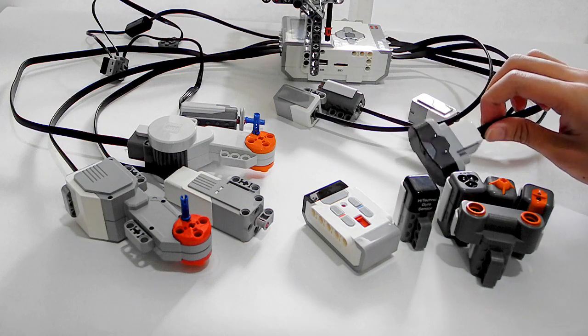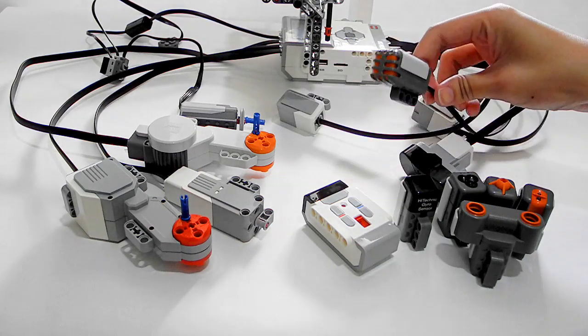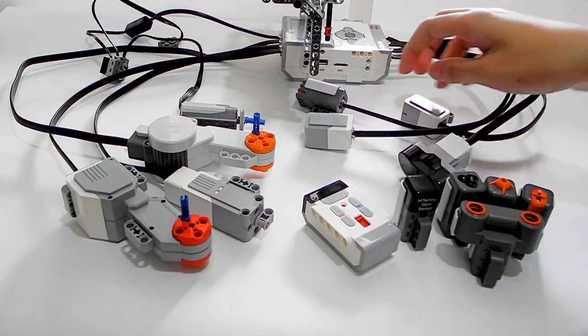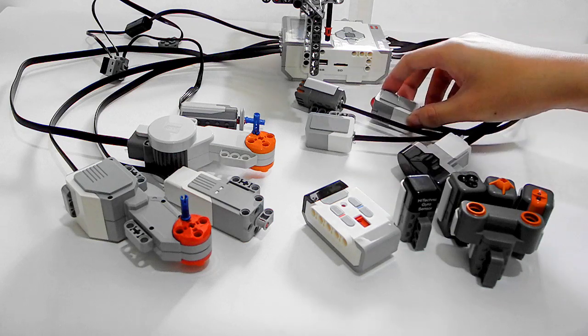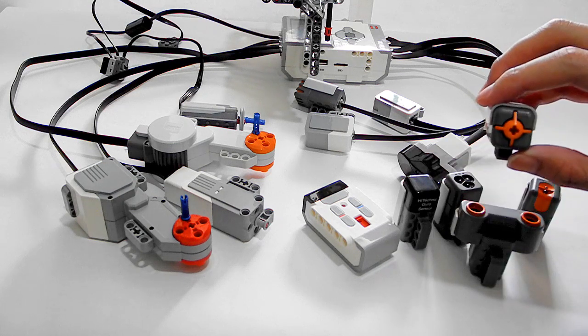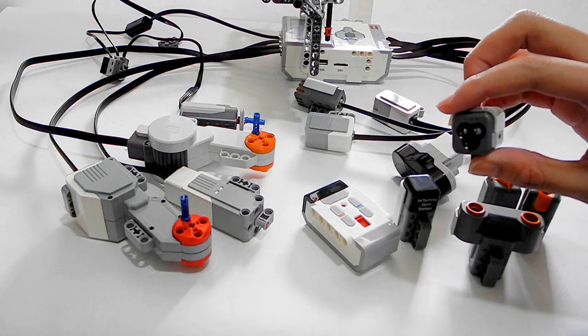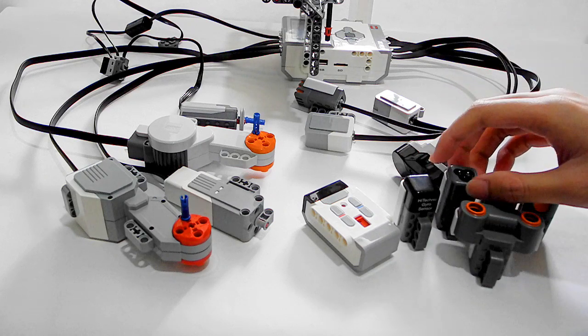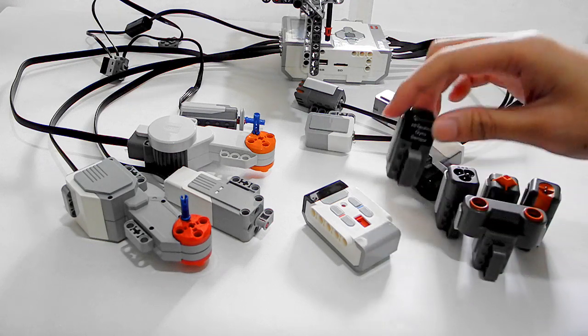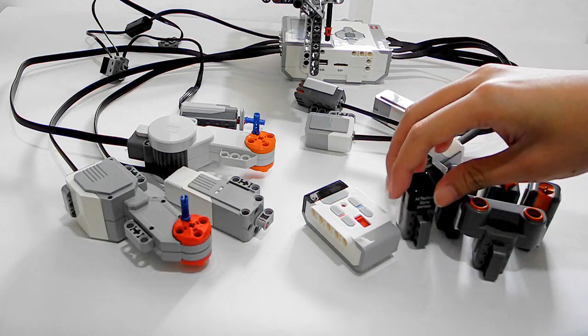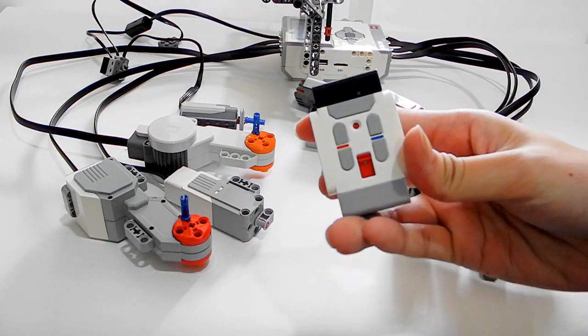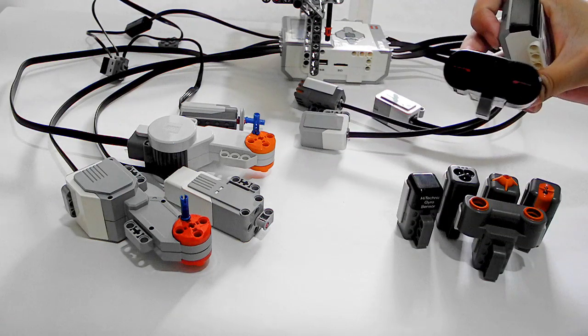And there are nine sensors. This is the NXT sound sensor, the EV3 light and color sensor, the EV3 touch sensor, and also NXT light sensor, NXT touch sensor, NXT light and color sensor, NXT ultrasonic sensor, and also there is a HiTechnic gyro sensor, and also this infrared remote control is used to connect to the infrared sensor.